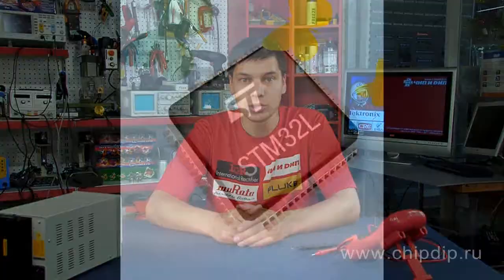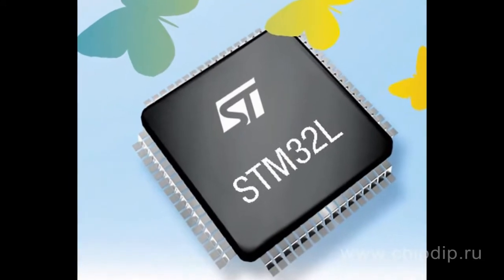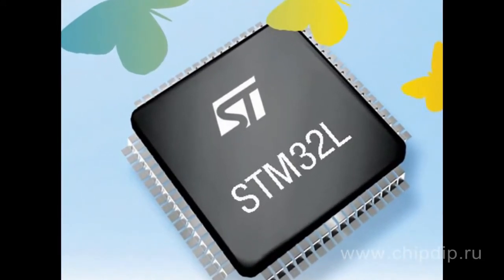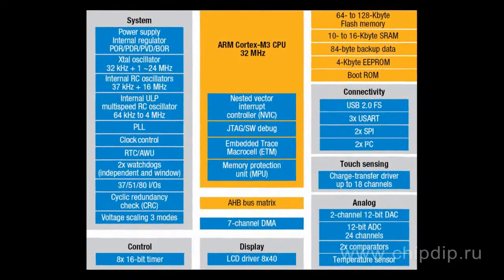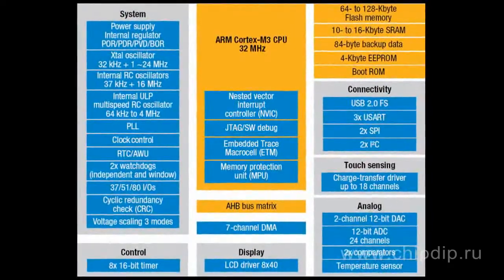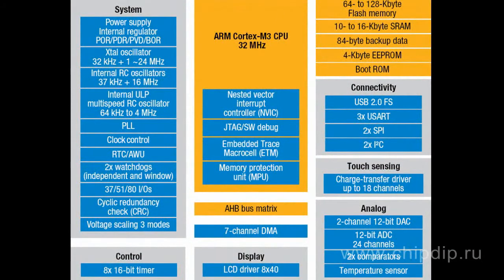Taking these two requirements into account, STMicroelectronics developed a 32-bit ARM Cortex-M3 based STM32L microcontroller. The STM32L line combines high productivity and code density characteristic for all ARM Cortex-M3 microcontrollers, along with low energy consumption in both active and sleep modes.